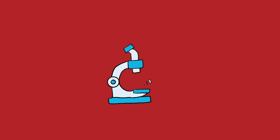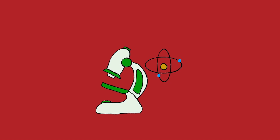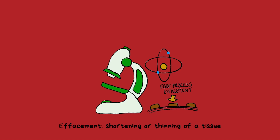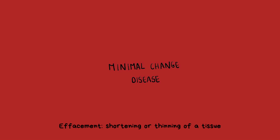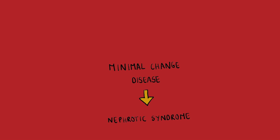When we take a biopsy of the kidney, we find that on light microscopy it's normal. So we do electron microscopy, and on electron microscopy, the foot processes within the kidney are effaced. This foot process effacement typically occurs in minimal change disease, which is what causes the nephrotic syndrome.